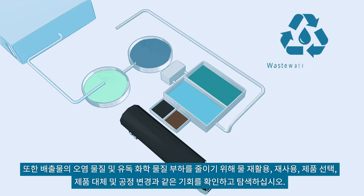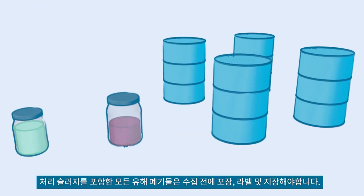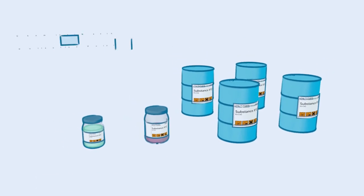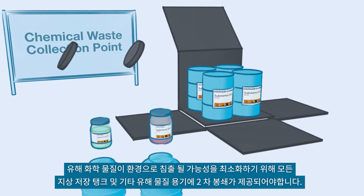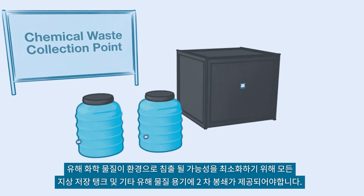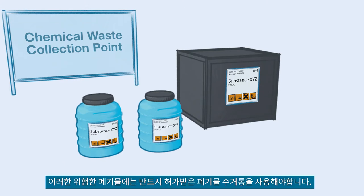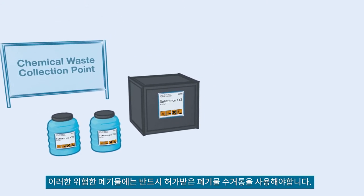Also, identify and explore opportunities such as recycling and reuse of water, product selection, product substitution, and process modification, in order to reduce pollutant and toxic chemical loading in discharges. All hazardous waste, including treatment sludge, should be packed, labeled, and stored properly before collection. Secondary containment should be provided for all above-ground storage tanks and other hazardous material containers, in order to minimize the chance of hazardous chemicals leaching into the environment. Be sure to use licensed waste collectors for these hazardous wastes.